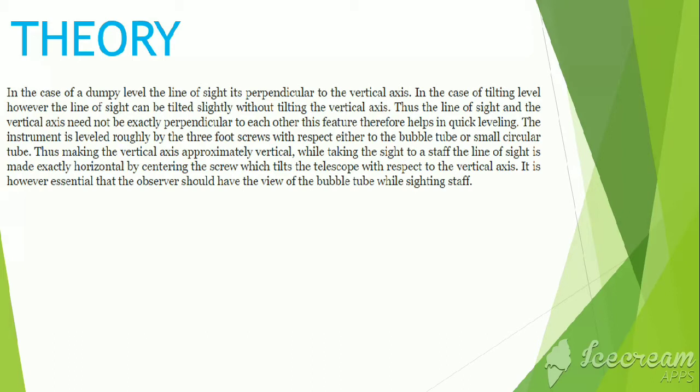The instrument is leveled roughly by the three foot screws with respect either to the bubble tube or small circular tube, thus making the vertical axis approximately vertical. While taking the sight to a staff, the line of sight is made exactly horizontal by centering the screw which tilts the telescope with respect to the vertical axis. It is however essential that the observer should have the view of the bubble tube while sighting staff.